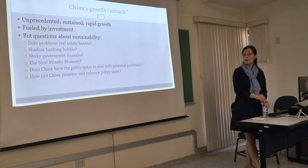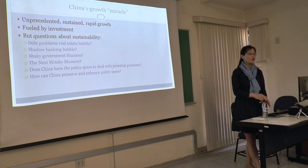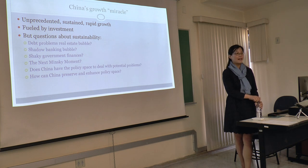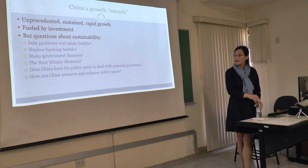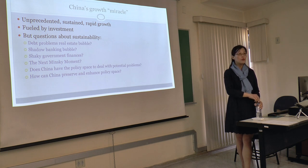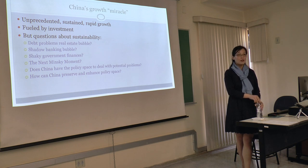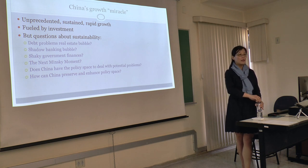The third problem is shaky government finances, especially at the local government level. Local governments borrow the most money and then find they cannot get any more financing — some of them go bankrupt. And the fifth concern is whether China has the policy space to deal with these potential problems. In the mainstream view, people think China has a really critical year and maybe can't deal with those problems. But based on our monetary approach, we can talk about what kinds of policy space can be used.